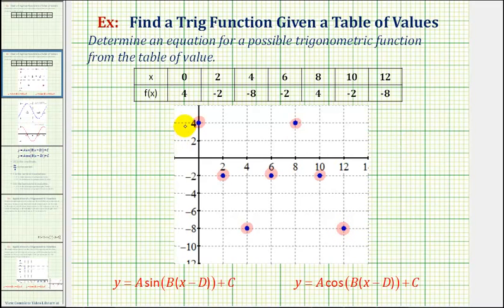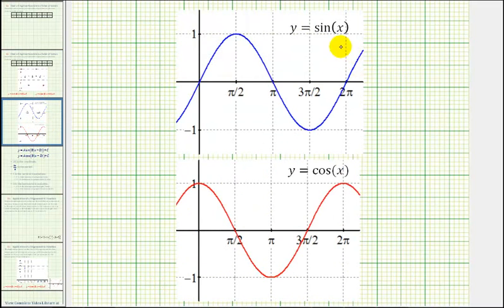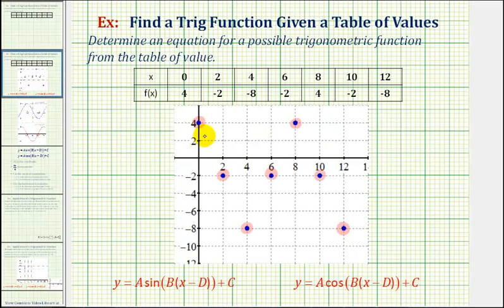So right away, based upon the behavior of these points, it should remind us of either the cosine function or sine function, meaning the behavior of these points resembles either the sine function as we see here in blue or the cosine function as we see here in red. So if we connect these points so that it resembles either the cosine or sine function, it would look something like this.